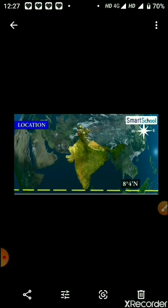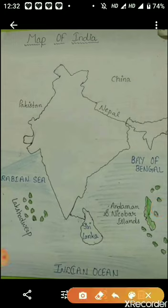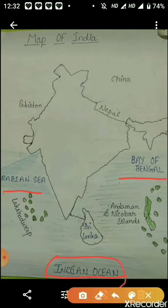India is surrounded by three water bodies: the Arabian Sea in the West, the Bay of Bengal in the East, and the Indian Ocean in the South. The Indian Ocean is named after our country, India.